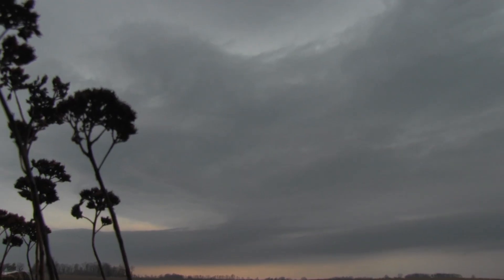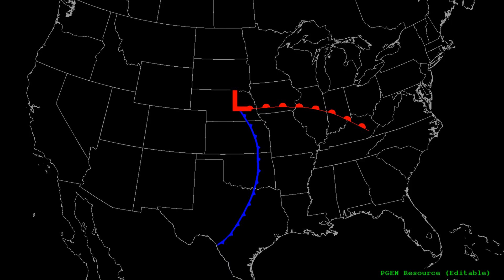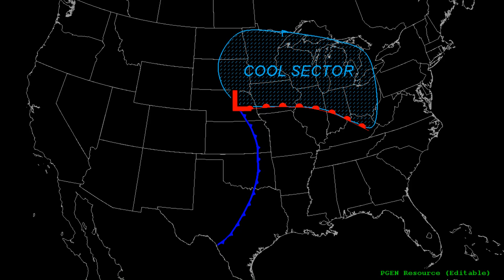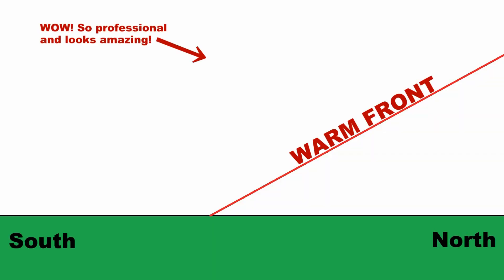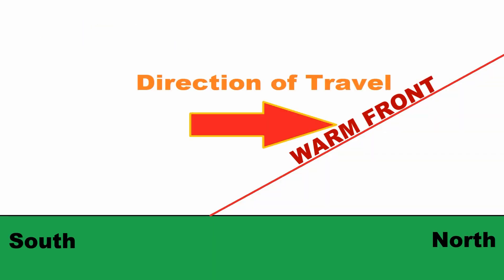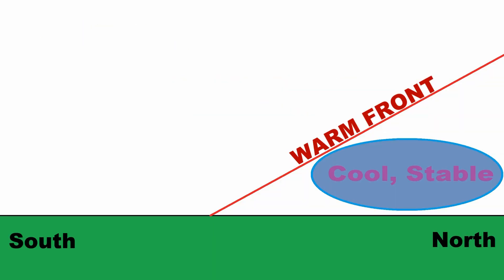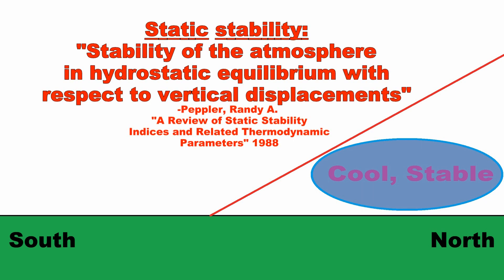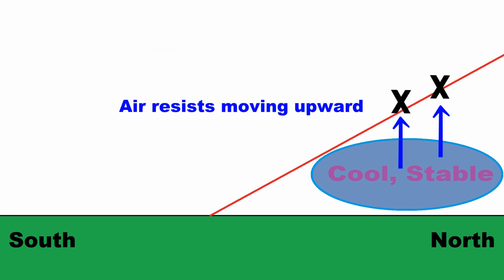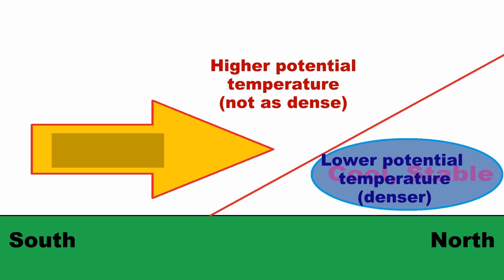To understand elevated thunderstorms, let's examine one of their more common environments: the cool sector of a mid-latitude cyclone. In this setup, a warm front is usually found moving into an area of cooler, relatively dense air. This shallow layer of air is statically stable — that is, it is resistant to vertical displacement. It also has lower potential temperature than the air on the warm side of the front.